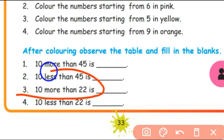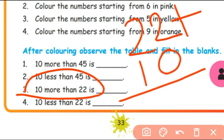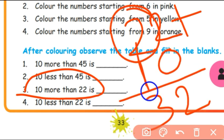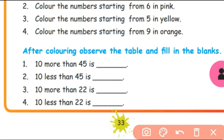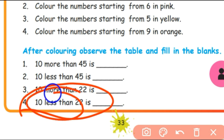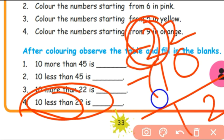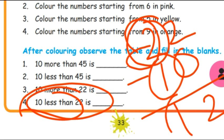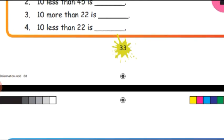Next, 10 more than 22: plus 10 means the tens place increases, so 22 plus 10 equals 32. Next, 10 less than 22: minus 10, so 22 minus 10 equals 12. The tens digit 2 decreases by 1 to give 1, so the answer is 12.